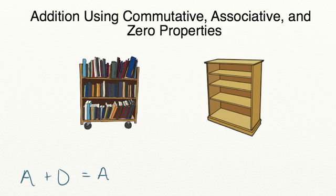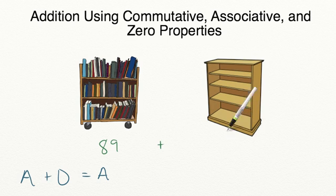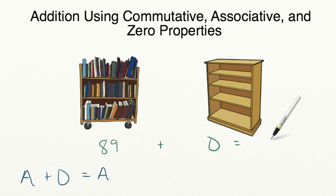Let's take a look at this using the bookshelves. As you can see, we have a bookshelf that's very full — it has 89 books. The other bookshelf has zero books. So how many books do we have in all? Using our property of zero, we know this value stays the same when adding it to zero. So 89 plus 0 equals 89.